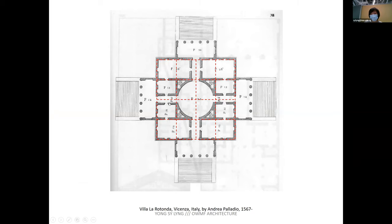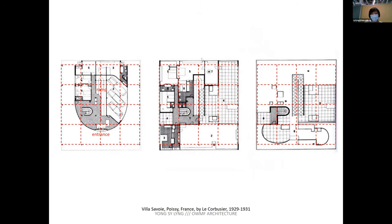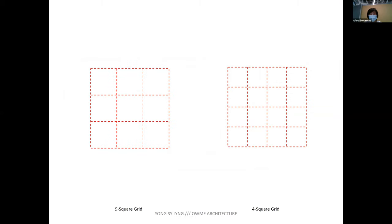Because you have a column in the middle, you have to enter from one side, and then the building becomes unbalanced — so what do you put on the opposite side? These are the languages: the four-square and nine-square grid. The nine-square grid means there's a kind of space and void in the center. The four-square grid usually has structure in the middle, which forces entry from the side, setting up the whole asymmetry and dynamism.